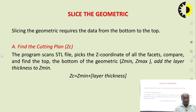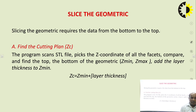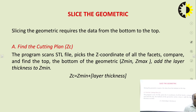How do we slice the geometry? Slicing the geometry requires data from the bottom to the top, so first we have to find the cutting plane. The program scans the STL file, picks the Z coordinates of all the facets, and finds the top and bottom of the geometry — Z minimum and Z maximum — and adds the layer thickness to Z minimum. So we can calculate the cutting plane in the Z direction by adding the layer thickness to the bottom coordinate: Z minimum plus layer thickness gives the current cutting plane.